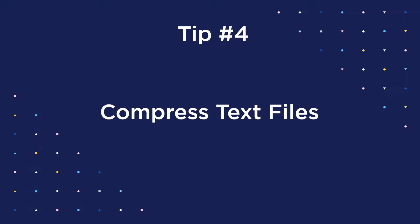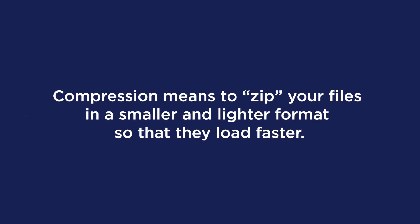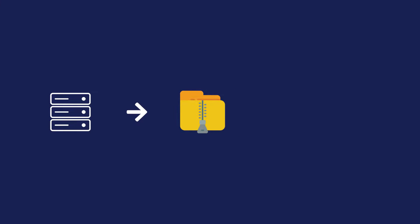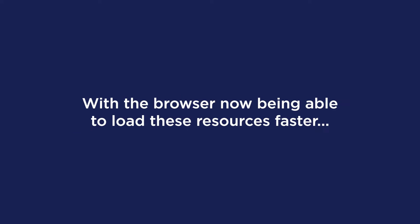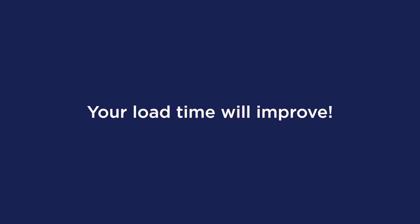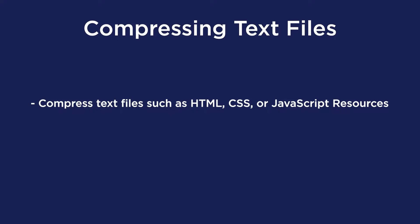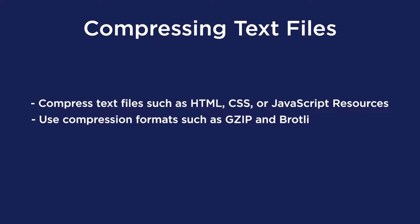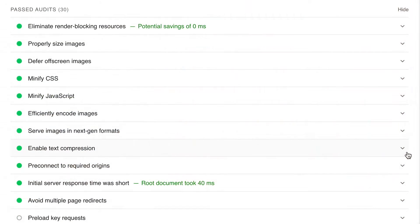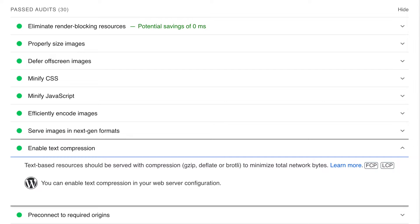Another high-impact action to improve your LCP is to compress text files. Compression means zipping your files into a smaller, lighter format so they load faster. Once you reduce their size, the transfer between browser and server will be much quicker. Compress text files such as HTML, CSS, or JavaScript resources using compression formats like GZIP and Brotli. GZIP is supported by most hosts, while Brotli is more performant and currently recommended by most. You can enable GZIP compression on WordPress using a plugin like Enable GZIP Compression or WP Rocket, which will address the enable text compression PageSpeed Insights recommendation.